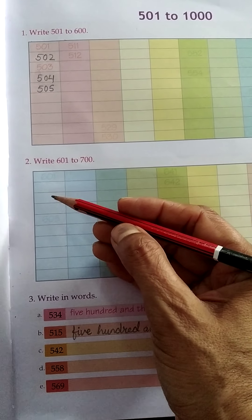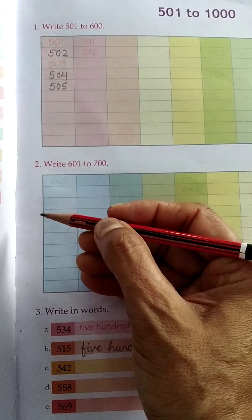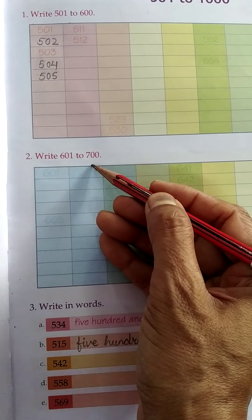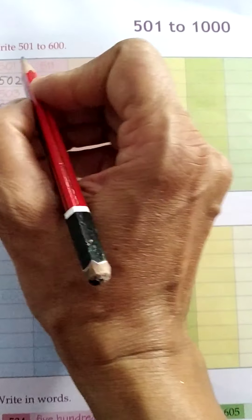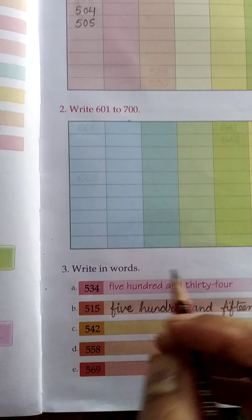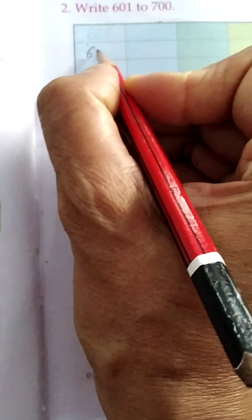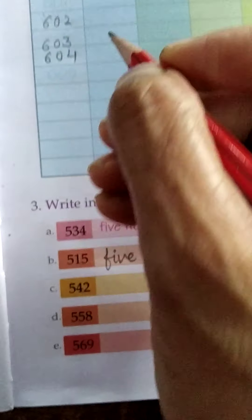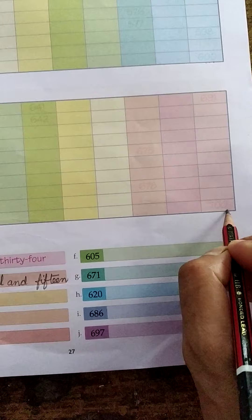Good. Here, you have to write 601 to 700. Sorry, students. Here, you write 501 to 600, up to 600. And here, you start writing from 601 to 602, 603, 604, 605 and up to 700. You have to write the number up to 700.